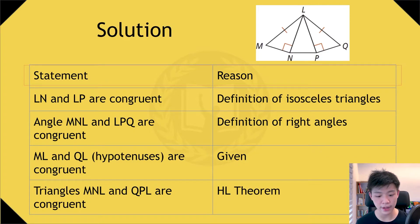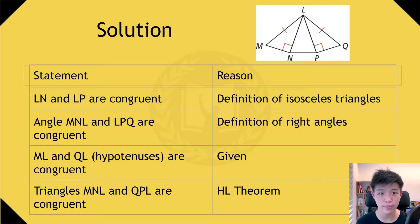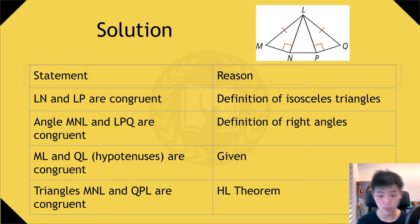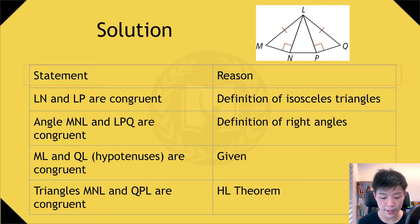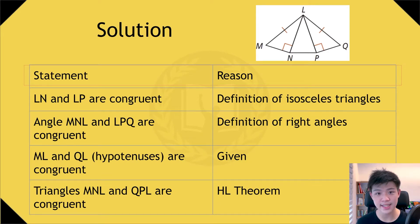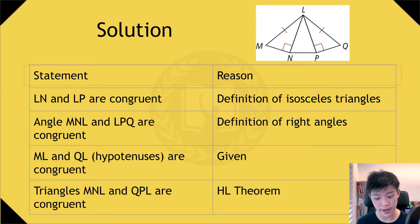In the second step, angles MNL and LPQ are congruent because it is given that these two angles are right angles, meaning they are both 90 degrees. And lastly, we know that ML and QL — which are the hypotenuses of the two right triangles on the side — are congruent. And now we know that triangles MNL and QPL are congruent.